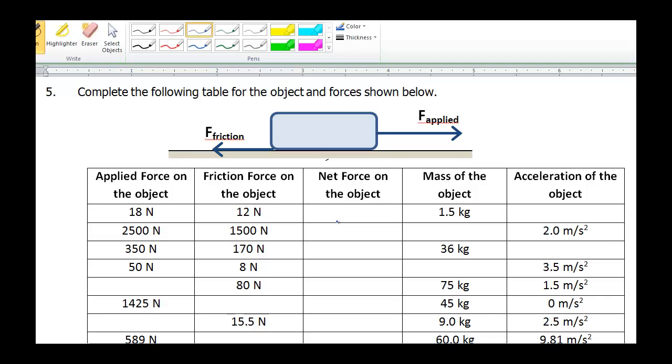Alright scholars, I'd like to do an example for you. This is number 5 on the force problems worksheet. You have a diagram here of an object, you have an applied force, you have the force of friction resisting the motion of it, and a little table underneath. I want to show you how this table works.